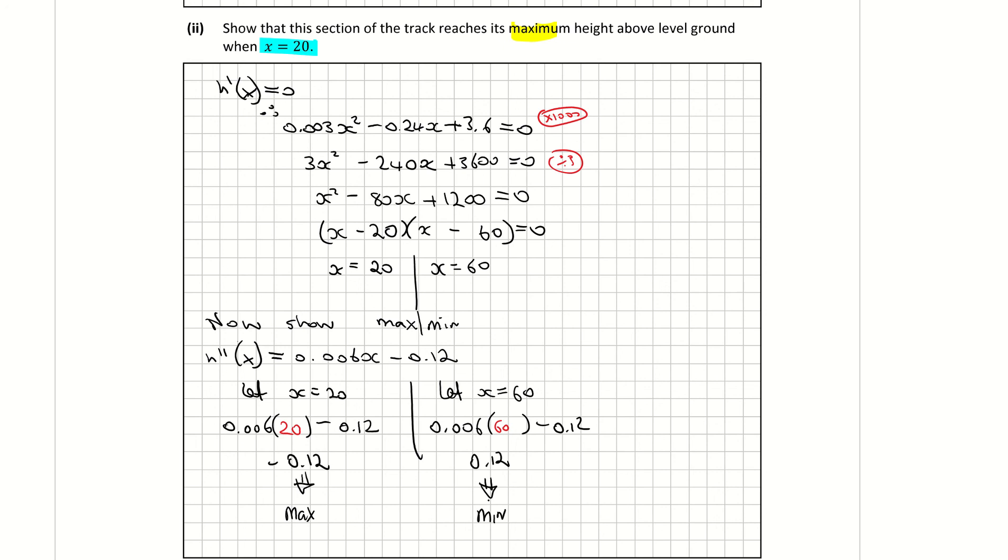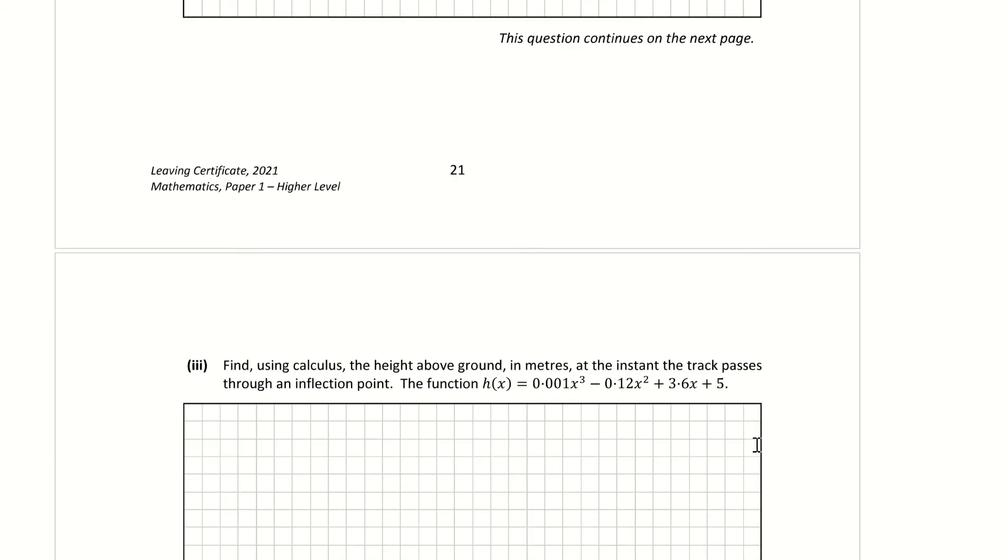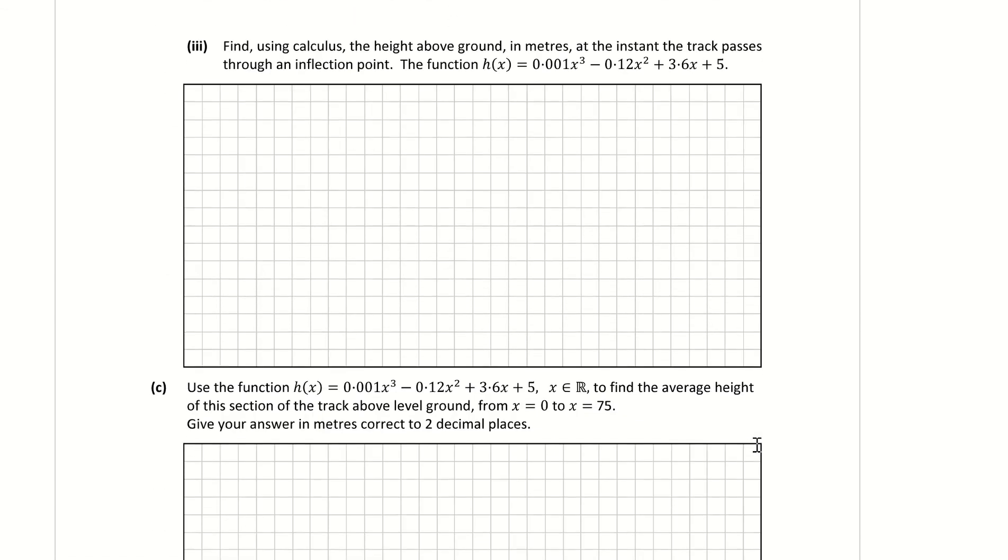So show that this section of track reaches its maximum height above level ground when x is equal to 20. Well, we have just done that there now. So we didn't need the right-hand side. All we needed to do was sub in the 20. But it's good to verify that 60 was not our solution. That's B part 2. Scrolling down now to B part 3.